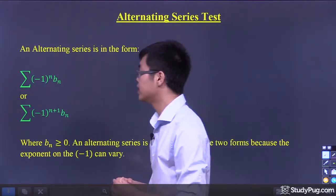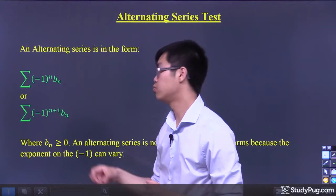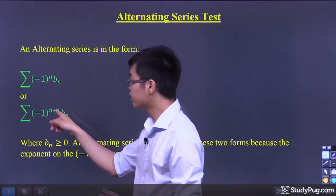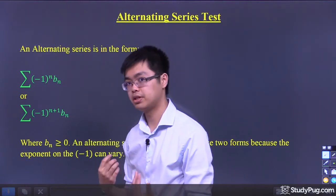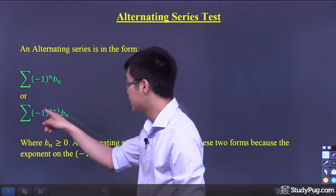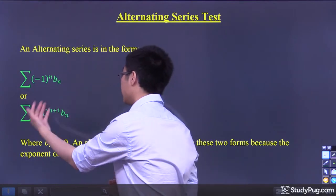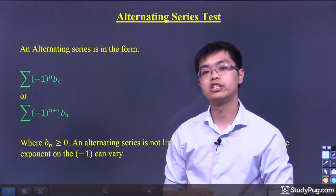But one thing to know here is that we're not restricted to these two forms. This here could be like n plus six, seven n plus one. As long as you have a negative one, then you can know that this is the alternating series.